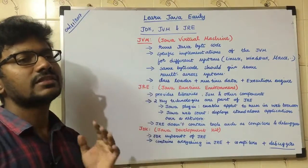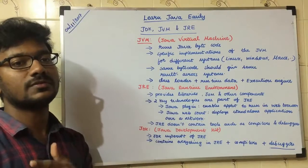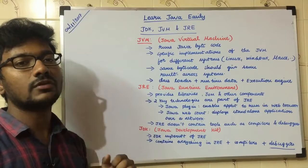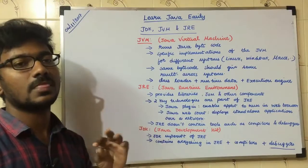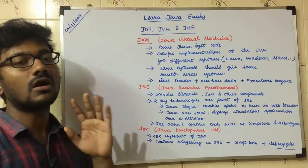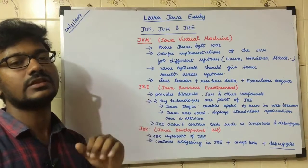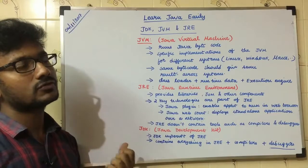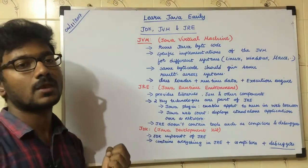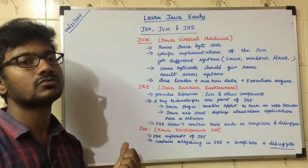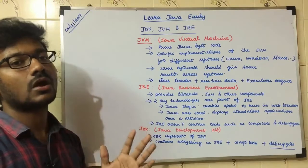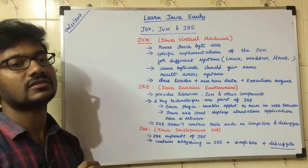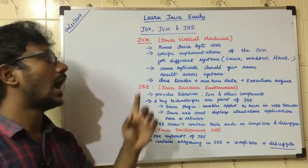First, what is JVM? JVM means Java Virtual Machine. It is not a physical machine — it is a virtual machine, so you can't touch it. What does the Java Virtual Machine do? It reads bytecode. We compile a Java source file — a .java file — into a .class file. That .class file is the bytecode.